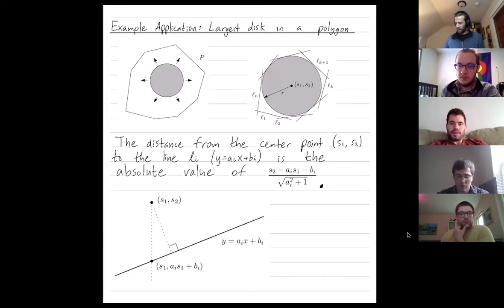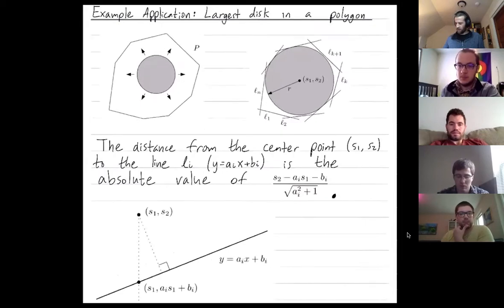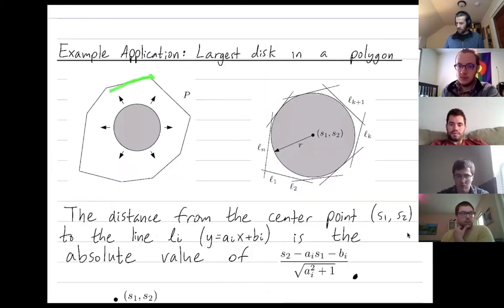So P on the left is our polygon and we're trying to find the largest disk that we can fit inside it. So here's our disk and imagine that you can move it around inside the polygon and you can make it bigger. And how do you find the center and the radius of the largest disk that fits inside this polygon?